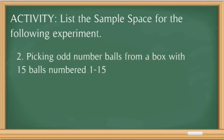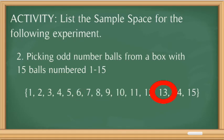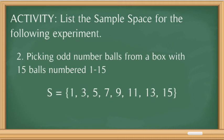Number 2: picking odd number balls from a box with 15 balls numbered 1 to 15. The sample space with no restrictions is 1 through 15. But what is asked is picking odd number balls, so the odd numbers are 1, 3, 5, 7, 9, 11, 13, and 15. This is our sample space of picking odd number balls from a box with 15 balls numbered 1 to 15.